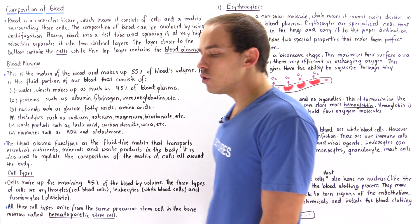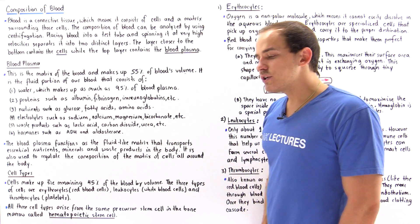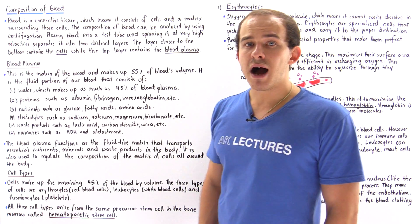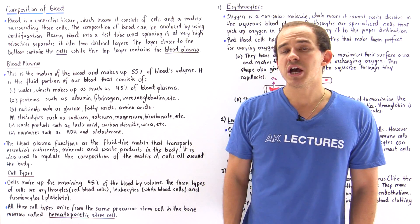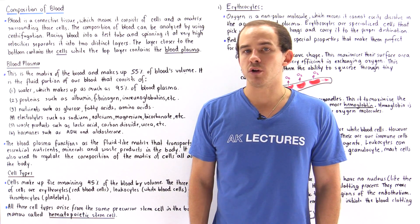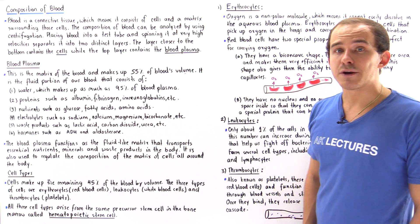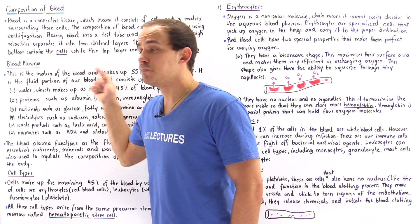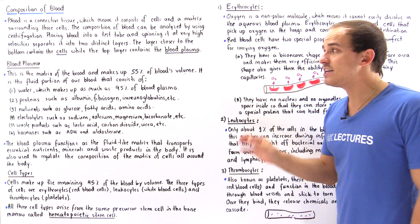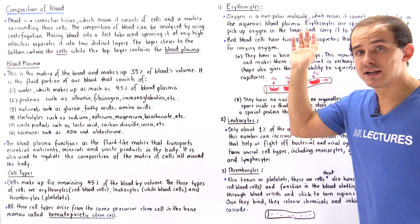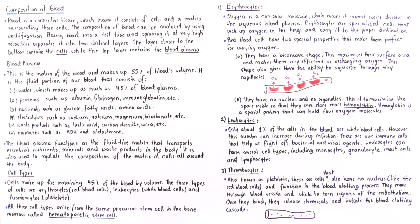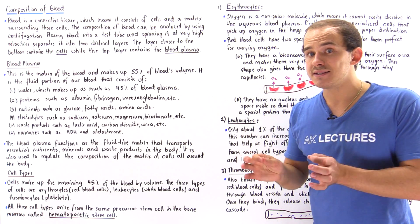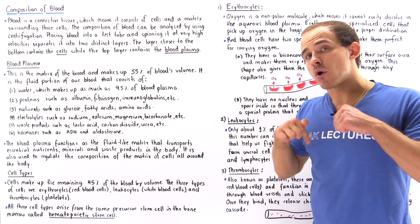So let's briefly discuss the function of each one of these cells. And let's begin with the red blood cell, also known as erythrocyte. Now recall that oxygen exists in its diatomic form. So in one oxygen molecule, we have two individual oxygen atoms that are double bonded by nonpolar bond. And that means oxygen is nonpolar.